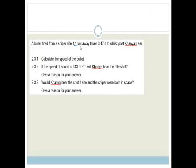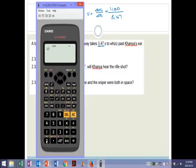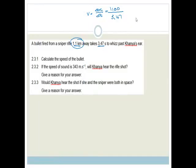Now, it says, a bullet fired from a sniper rifle 1.1 kilometers away takes 3.47 seconds to whiz past Kanye's ear. Calculate the speed of the bullet. So, we know that velocity equals change in displacement over change in time. The problem with this is this is in kilometers. So, we need to change that to meters. So, we've got 1,100 meters because there's 1,000 meters in the kilometers. So, it's 1,100 divided by 3.47, and that gives us 317.002, so we're round to two decimal places. So, the bullet's speed is 317 meters per second.